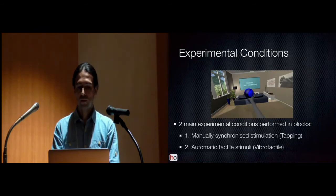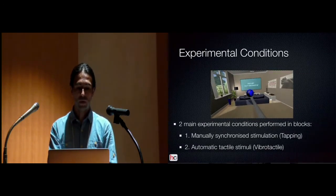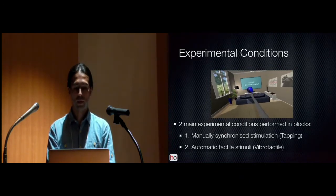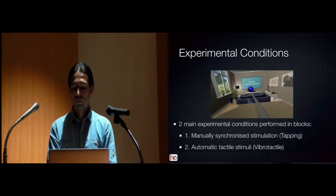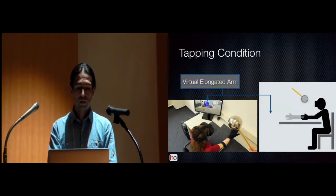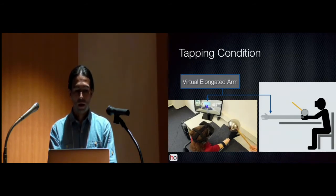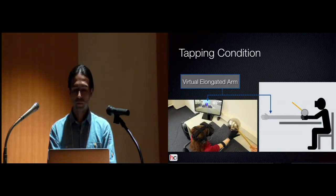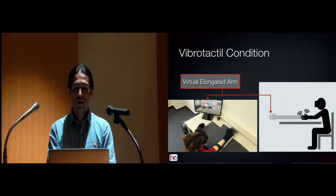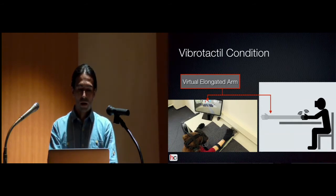We have two main conditions: condition one is the manually synchronized stimulation, called tapping, and condition two is the automatic tactile stimuli, called the vibrotactile condition. In the tapping condition, a trained operator provides proper feedback with no delay, always tapping manually. In the vibrotactile condition, feedback is provided by our device — the glove vibrates whenever a collision is detected between a bouncing ball and the virtual hand. We have four dependent variables as questions on a scale from 0 to 10, measuring ownership, proprioception, comfort, and perceived length of the virtual arm.